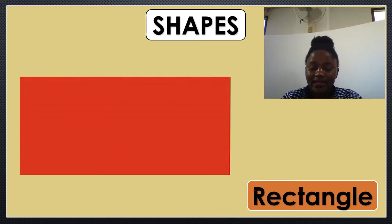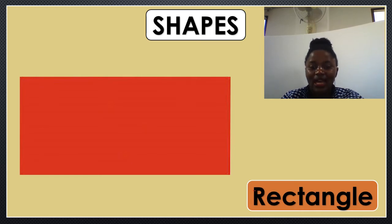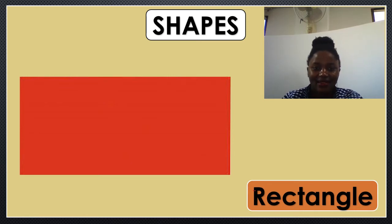Let's spell the word rectangle: R... E... C... T... A... N... G... L... E. The word is rectangle. Rectangle. Great! Next. Rectangle.